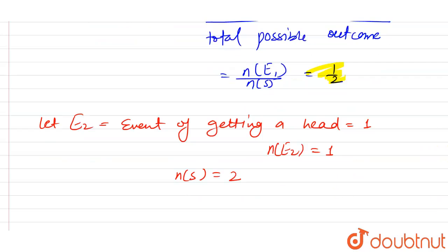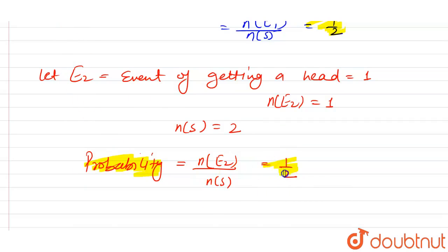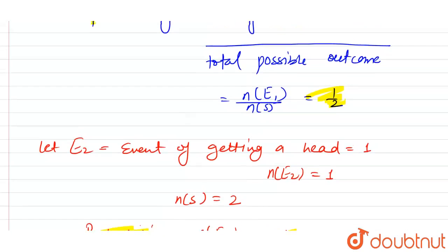The probability of getting a head = n(E2) / ns = 1/2. So the probability of getting a head is also one by two.